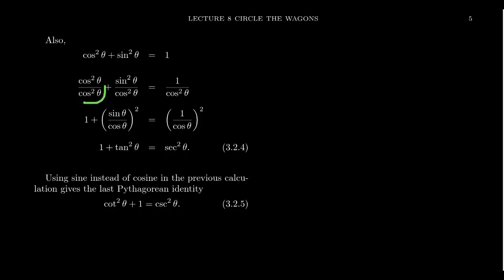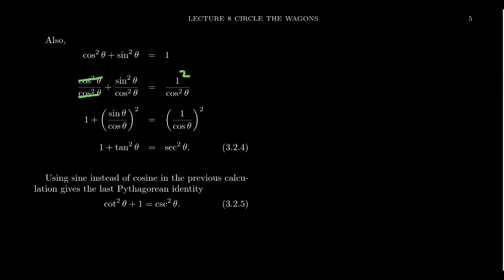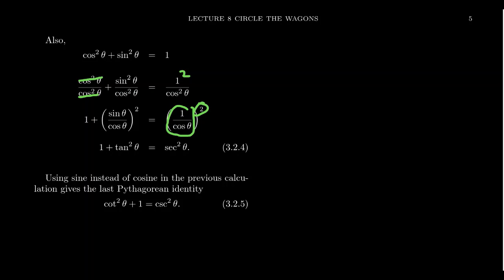Dividing cosine squared plus sine squared by cosine squared, we can break it into two separate fractions: cosine squared over cosine squared, plus sine squared over cosine squared, equals 1 over cosine squared. Cosine squared over cosine squared cancels to 1. Sine squared over cosine squared factors as sine over cosine quantity squared, which is tangent squared. And 1 over cosine squared is 1 over cosine quantity squared, which is secant squared. So from the original Pythagorean equation, cosine squared plus sine squared equals 1, we derive the new Pythagorean relationship: 1 plus tangent squared equals secant squared.